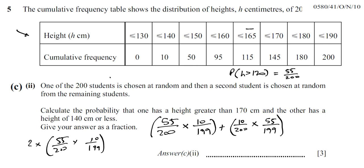It could be either way around, so you have to account for both. Think of it like a tree diagram: the first branch is greater than 170 or less than 140. You need to take both outcomes into account — the first student's height is greater than 170 and the second is less than 140, or the first is less than 140 and the second is greater than 170.